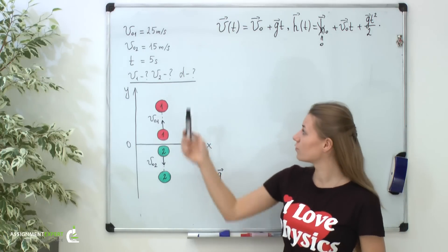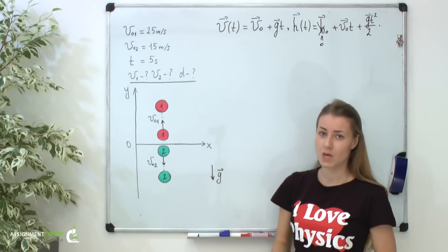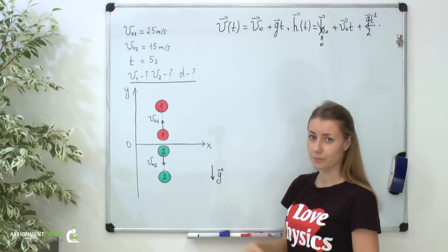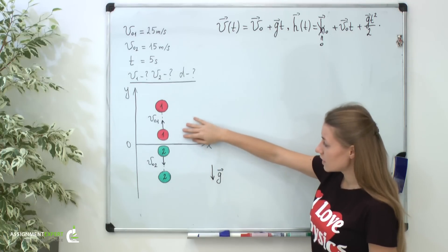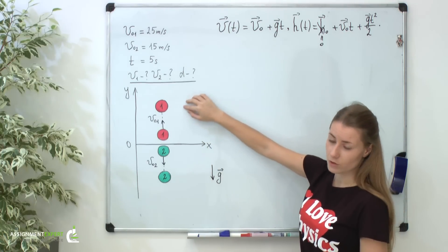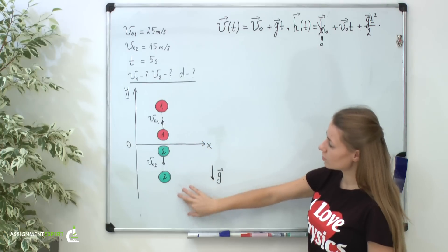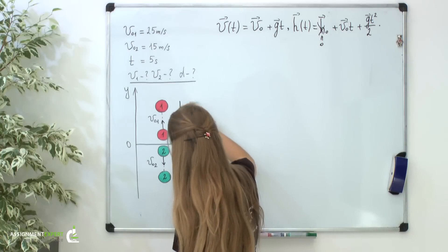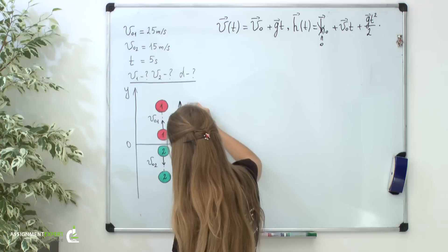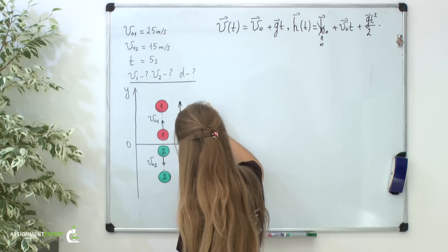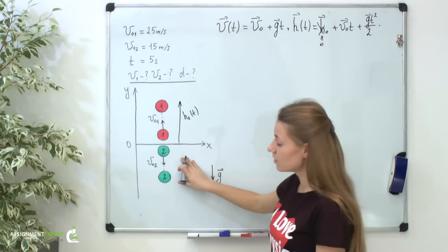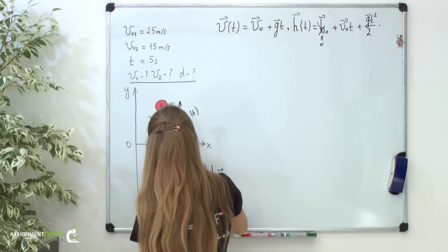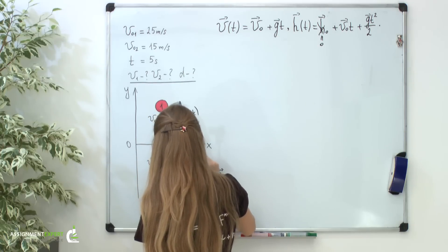Now, let's discuss how to find the distance d between our two balls. It can be easily understood with the help of our picture. Look at it. You can see that our red ball flies upwards and our green flies downwards. So, after some time t, the distance to our red ball will be h1 of t. At the same time, the distance to the green ball will be h2 of t.